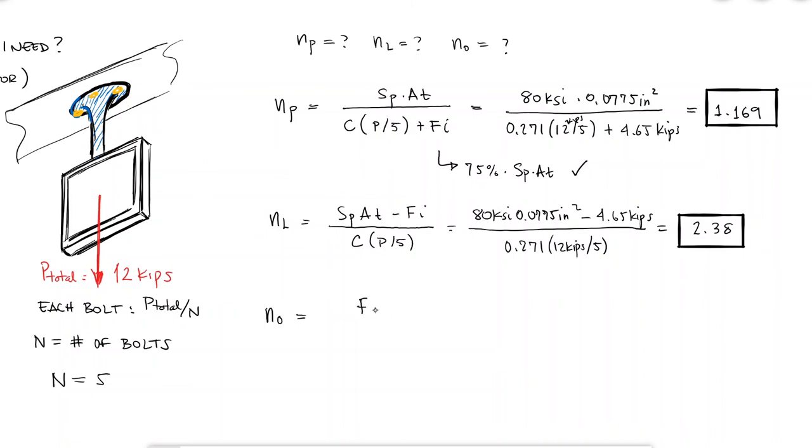And finally, for the factor of safety against joint separation, I find a value of 2.65, which tells me that a preload of 75% the proof load, and an external load of 12 kips over 5 will not make the members separate.